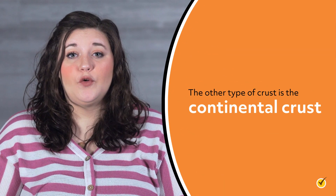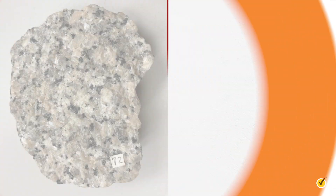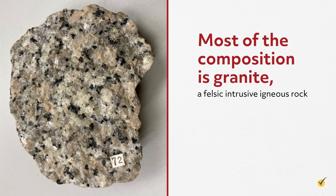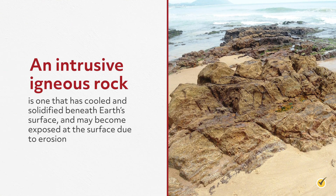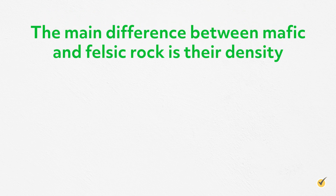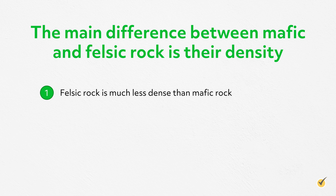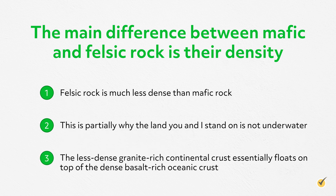The other type of crust is the continental crust. Despite being much thicker than the oceanic crust, the continental crust is much less dense. Most of the composition is granite, a felsic intrusive igneous rock. A felsic rock is an igneous rock that is rich in light-colored minerals like feldspar and quartz. An intrusive igneous rock is one that has cooled and solidified beneath Earth's surface and may become exposed at the surface due to erosion. The main difference between mafic and felsic rock is their density — felsic rock is much less dense than mafic rock. This is partially why the land you and I stand on is not underwater: the less dense granite-rich continental crust essentially floats on top of the dense basalt-rich oceanic crust.